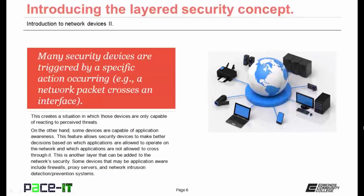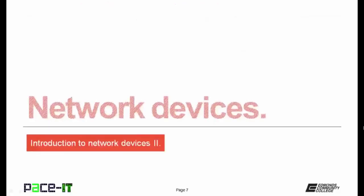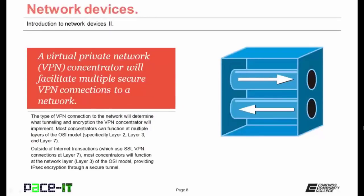Some devices that may be application aware include firewalls, proxy servers, and network intrusion detection systems or network intrusion prevention systems. Let's move on to some network devices. A virtual private network concentrator, or VPN concentrator, will facilitate multiple secure VPN connections to a network. The type of incoming VPN connection will determine what tunneling and encryption the VPN concentrator will implement. Most concentrators can function at multiple layers of the OSI model, specifically at layers 2, 3, and 7. Outside of an internet transaction, most concentrators will function at the network layer, or layer 3, providing IPsec encryption through a secure tunnel.